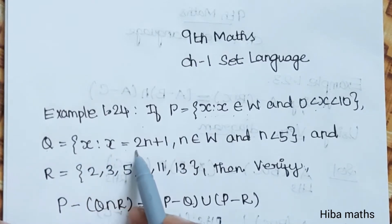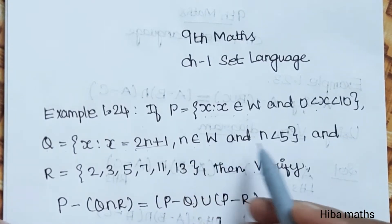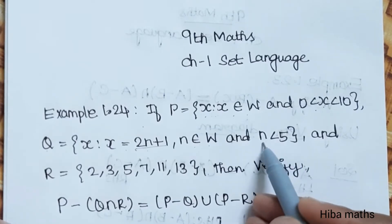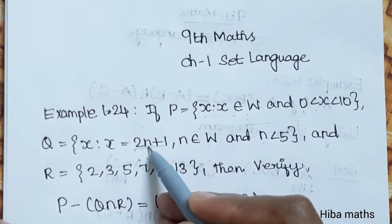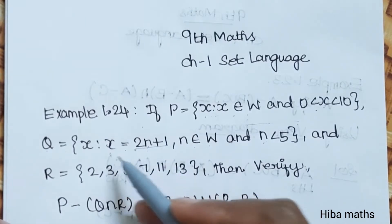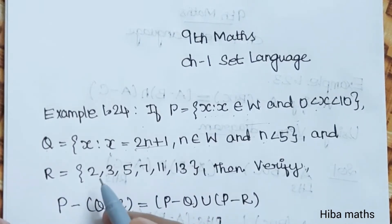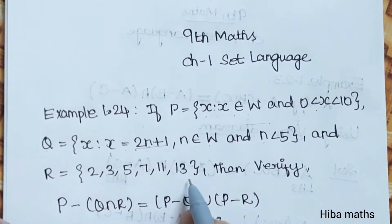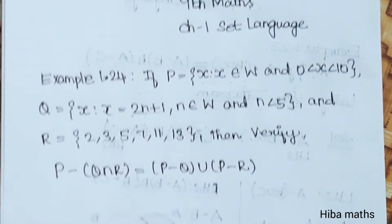Q is equal to x such that x is equal to 2n plus 1, where n is an element of whole numbers and n is less than 5. And R is equal to 2, 3, 5, 7, 11, 13. Then verify P minus Q intersection R is equal to P minus Q union P minus R.